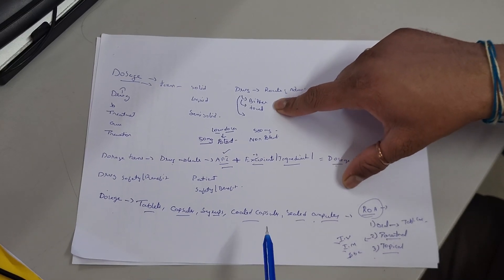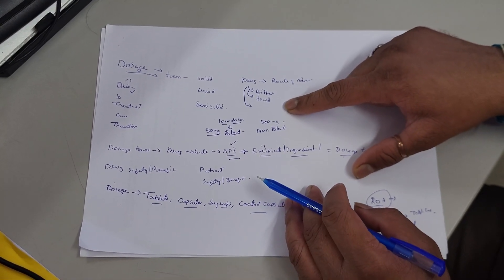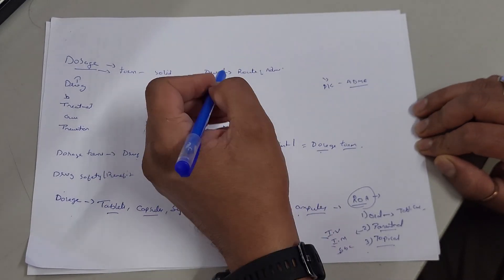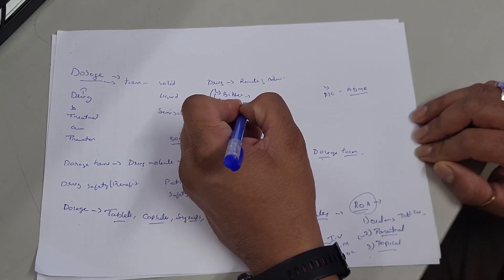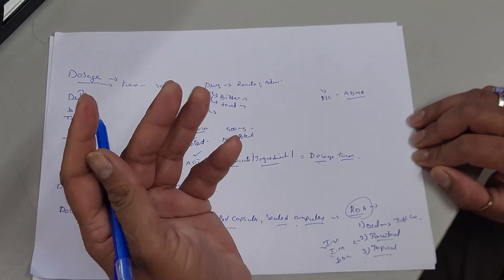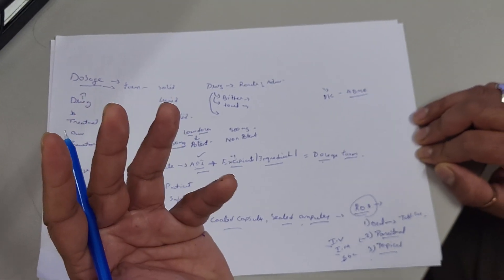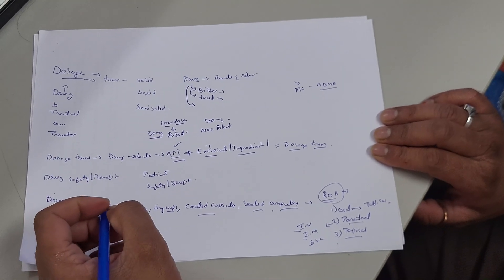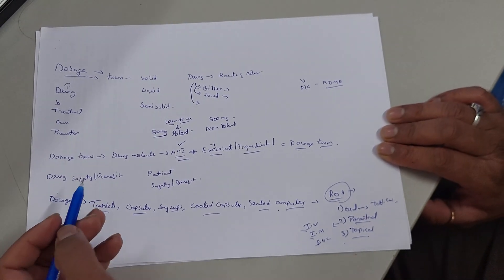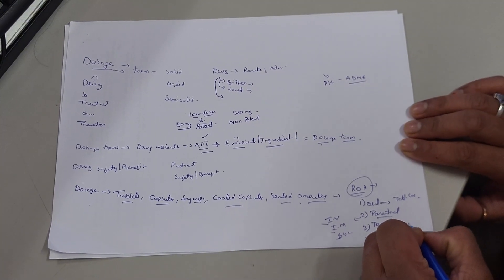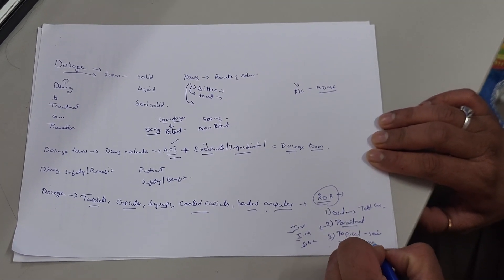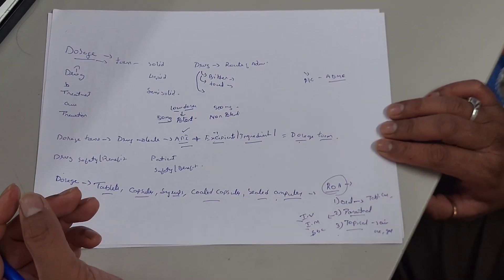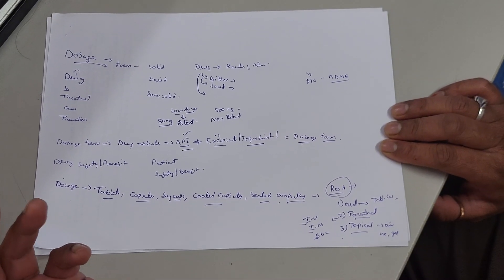To mask the bitter taste and odor of a drug substance, the drug can be concealed in the form of capsules. For drugs with foul smell or foul odor, we need to mask those properties as they are not acceptable. Semi-solid dosage forms for the topical route include ointments, creams, gels, and jellies. There are also nasal route preparations and suppositories.